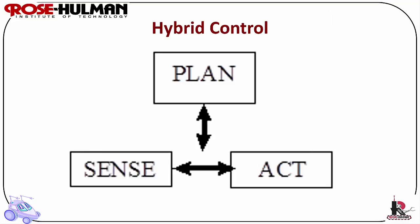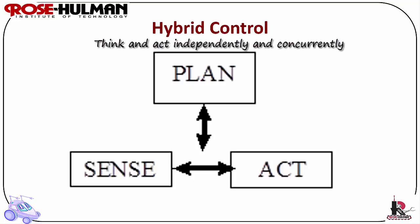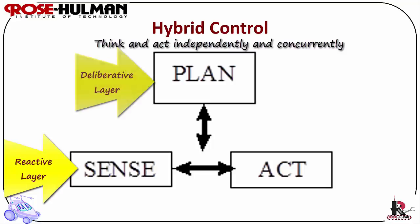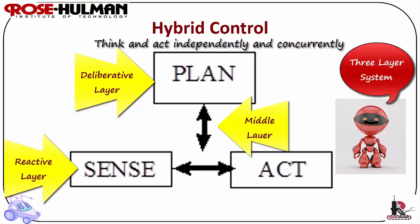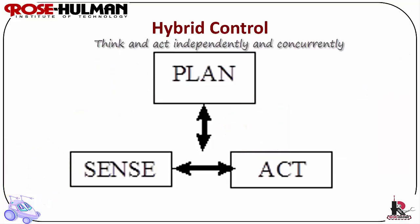The way we typically describe hybrid control is: think and act independently and concurrently. It's a combination of reactive and deliberative control. The reactive layer is the bottom level and deals with immediate reaction. The deliberative layer is the top level and creates plans. The middle layer connects the two. It is typically called a three-layer system. Reactive and deliberative layers have different timescales, representations, signals, and systems.